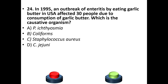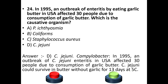Twenty-fourth question: in 1995 an outbreak of enteritis by eating garlic butter in the USA affected 30 people. Which is the causative organism? Your answer is Campylobacter jejuni. In 1995, an outbreak of Campylobacter jejuni enteritis in the USA affected 30 people due to consumption of garlic butter, and it could survive in butter without garlic for 13 days at 5°C.